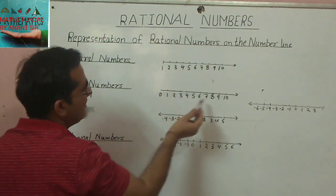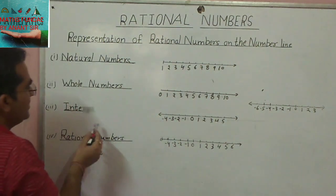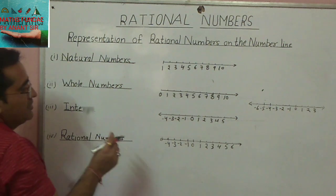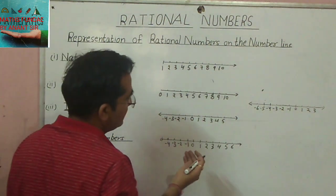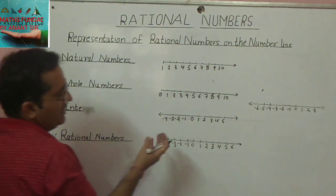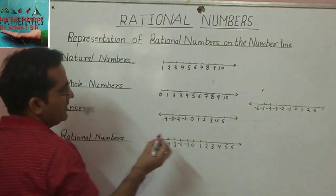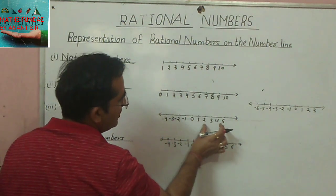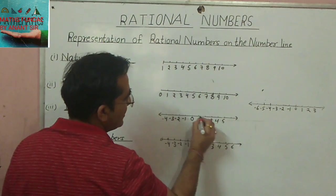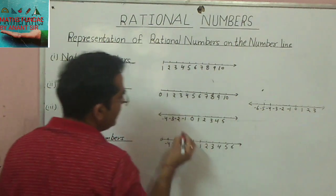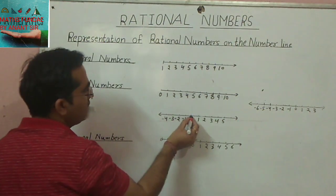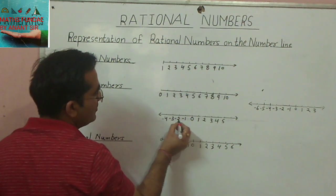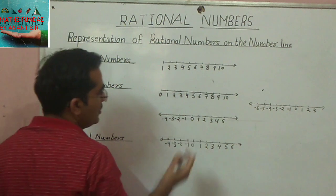Integers means the numbers with a negative sign, with a positive sign, and including zero. To the right of zero we write all positive values up to infinity. Likewise, to the left we also move up to infinity, writing minus one, minus two, minus three, minus four, and so on.